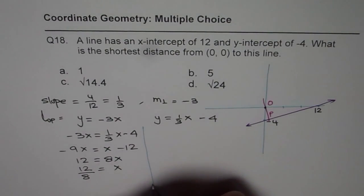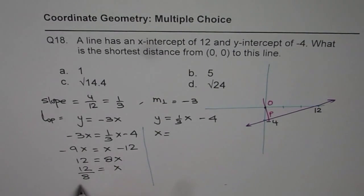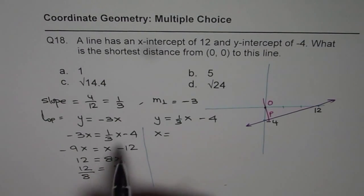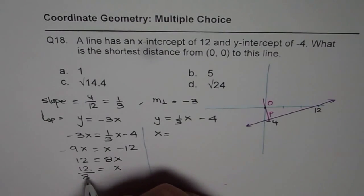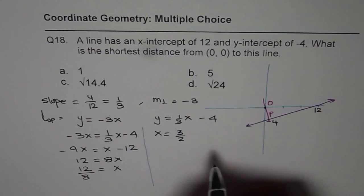So we get the value of x as 12 over 8, or because these units are also in fractions, we can divide both by 4. So it is 3 over 2. So x value is 3 over 2.